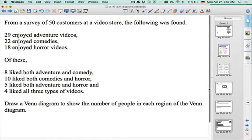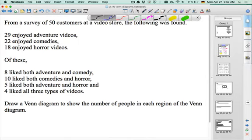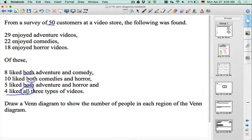Next, we have this is our final example for the day two podcast. We have a survey of 50 customers at a video store. We found that 29 enjoyed adventure, 22 enjoyed comedy, 18 enjoyed horror. Of these, 8 liked both adventure and comedy, 10 liked both comedy and horror, 5 liked both adventure and horror, and 4 liked all three types of videos.